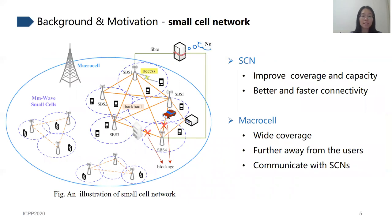This figure is an illustration of a small cell network. In this area, many small cells are connected to the macrocell base station. They can communicate with each other. We can find that deploying SCN in 5G networks can improve coverage and capacity, and they can provide better and faster connectivity.